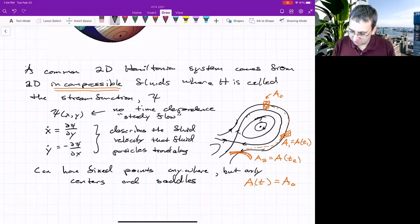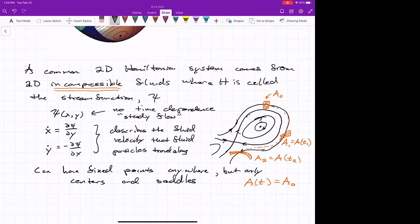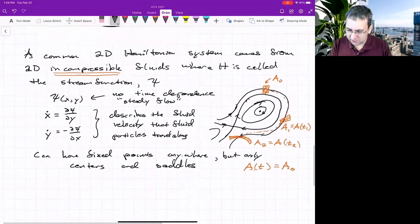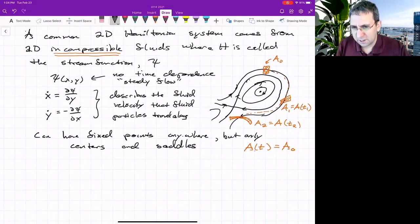Keep this in mind, we can have fixed points anywhere, but only centers and saddles. And maybe you're asking, well, why only centers and saddles? It does follow from this incompressibility. And where does incompressibility, what does that mean? Usually we write the fluid flow as vector u.